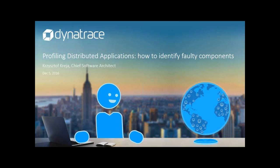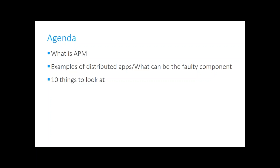First I'll mention the whole APM topic, then I'll dive into examples of distributed apps which you might already know, and together with that I'll try to see what kind of faulty components we can have there. Then I'll focus on 10 things we can look at when dealing with such applications.